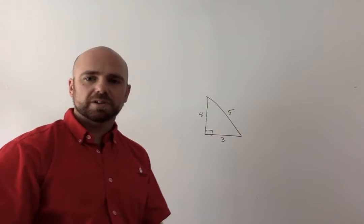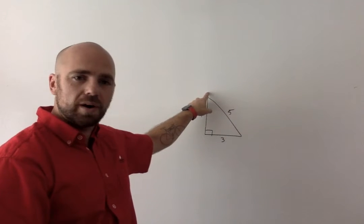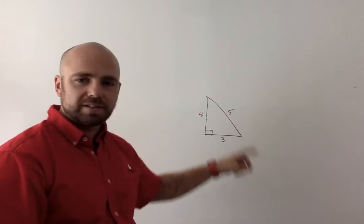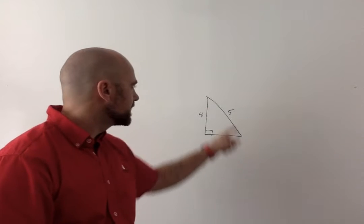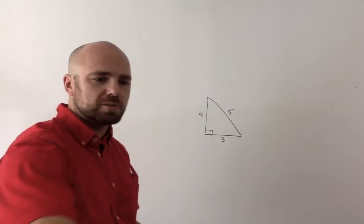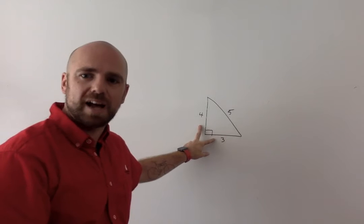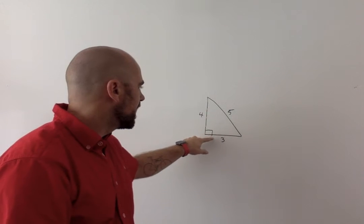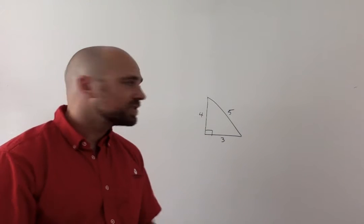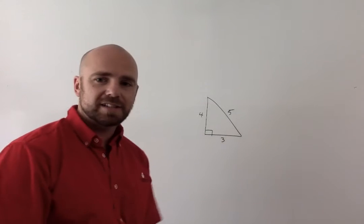When we're talking about a triangle, the longest length or the side that's opposite of the 90-degree angle is called our hypotenuse. This one has a distance of 5 centimeters. What we have attached to the 90-degree angle are called legs. In this situation, one leg has a distance of 4 and the other leg has a distance of 3.